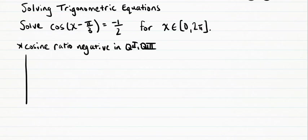So we draw our Cartesian plane showing solutions in quadrant 2 and quadrant 3. Both will have the same related acute angle beta, and we write the cosine ratio for beta using the positive ratio, so one half.